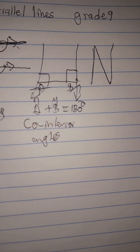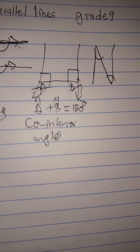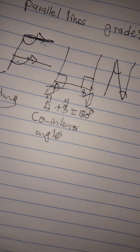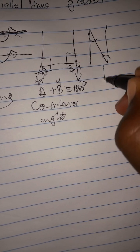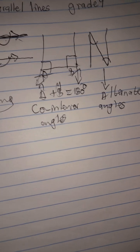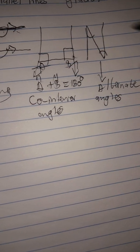Then let's go to the N shape. This angle and this angle will be equal. They can also form a Z — if you check, when you look at it this way, you can see it forms a Z. So we call this alternate angles. There must also be parallel lines involved, which you will see by those arrows indicating parallel lines.